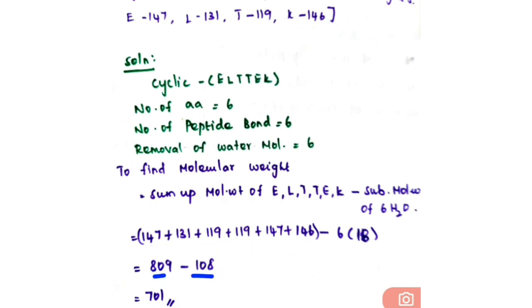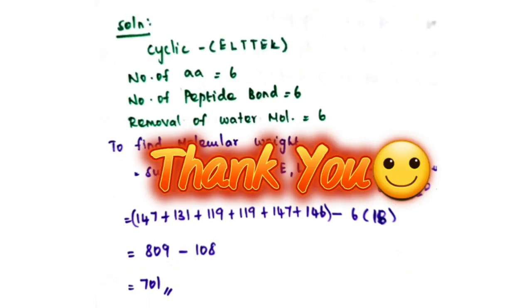So 809 minus 108 gives the answer: 701 daltons. Thank you for watching. If you like my videos, please subscribe and share.